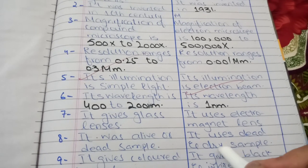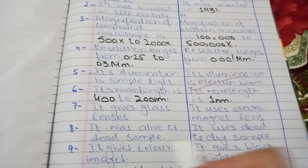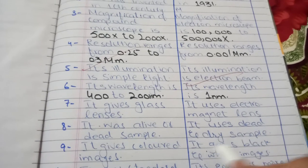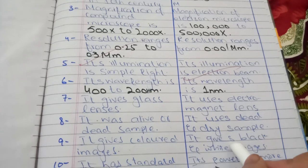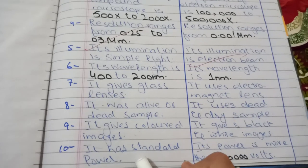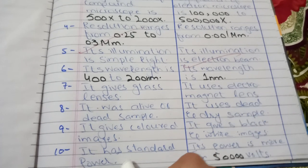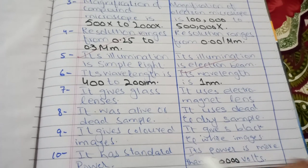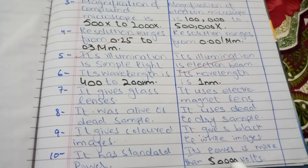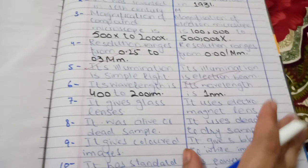Compound microscope gives colored images, whereas electron microscope gives black and white images. Compound microscope has standard power, whereas electron microscope power is more than fifty thousand volts.